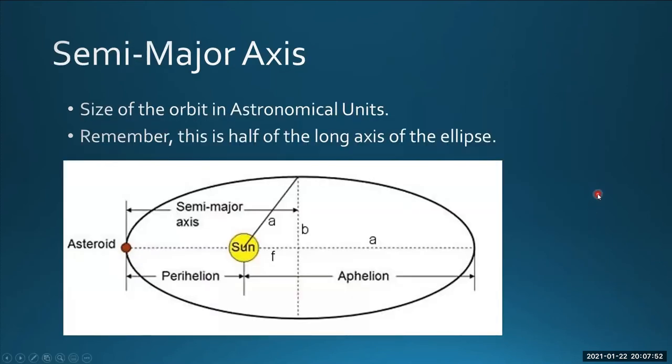The next one is the semi-major axis. If you think back to your arithmetic, there's a long axis and there's a short axis. The semi-major axis is half the distance of the whole long axis. That's why it's semi. You need that to be describing elliptical orbits.